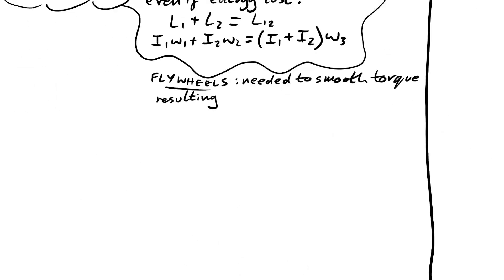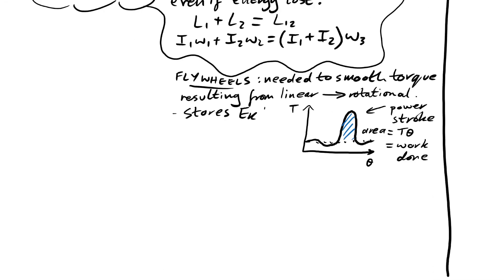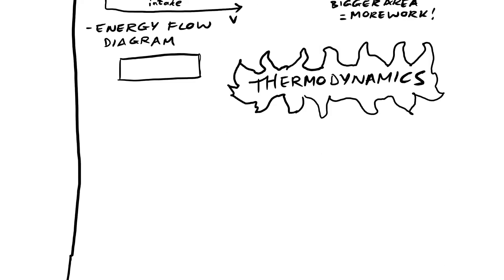Straddling the gap between rotational and thermodynamics, flywheels are needed to smooth that torque in an engine. The lumpy torque results from the whole thing that linear motion is converted into rotational motion. Here's a torque angle diagram to show what the torque is like during one cycle of a piston doing its four strokes in an engine. We can see the power stroke there. And if we didn't have a flywheel, then we'd just be jerking along the road. So that's when we need a flywheel to smooth out that torque. Flywheels, of course, store kinetic energy.